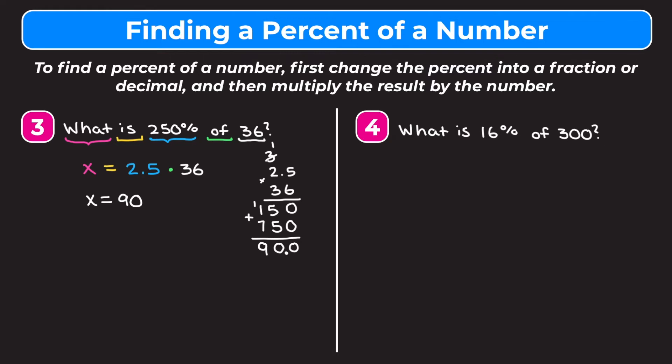We just want to double-check that our answer makes sense. 250% of 36 should be more than 36 because 250% is more than 100%. It should also be more than double 36 because 200% is double — double 36 is 72 — and our answer of 90 is bigger than 72, so we're at least in the right ballpark.